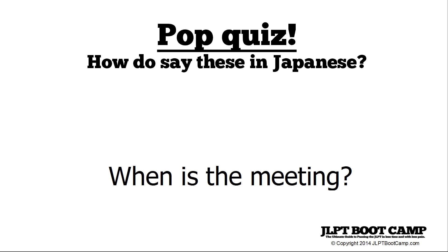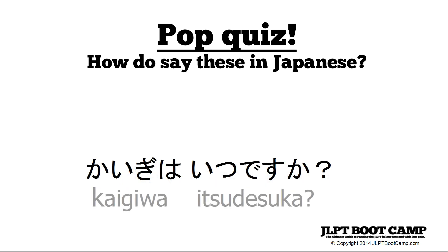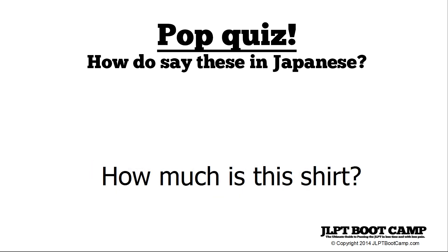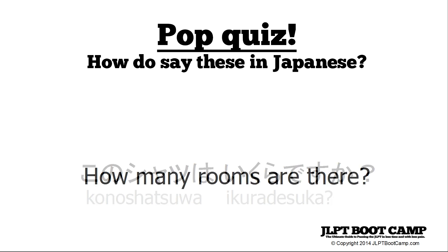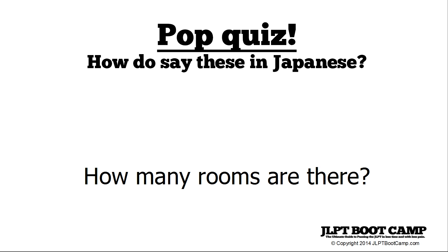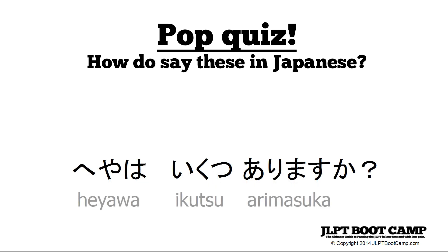Let's wrap up with a quick pop quiz. First: 'When is the meeting?' Answer: 'Kaigi wa itsu desu ka?' — kaigi is meeting, itsu is when. Second: 'How much is this shirt?' Answer: 'Kono shatsu wa ikura desu ka?' — kono is this, shatsu is shirt, ikura asks about the price. Third: 'How many rooms are there?' Answer: 'Heya wa ikutsu arimasu ka?' — heya is room, ikutsu is how many items, arimasu means are there.